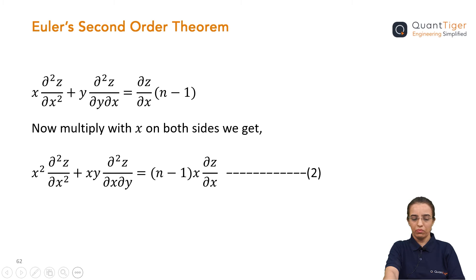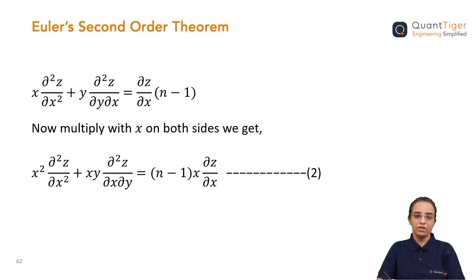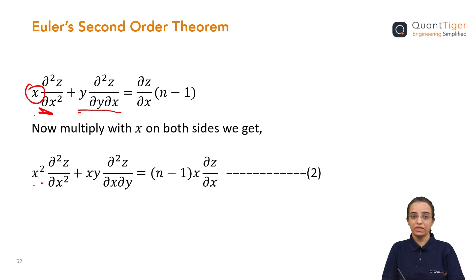Looking at the proof of Euler's theorem, it requires x² · ∂²z/∂x² and y² · ∂²z/∂y∂x, so we need those square terms. That's why I multiply this whole equation by x. After multiplying by x, I get the x² term on the left hand side. I call this equation 2.